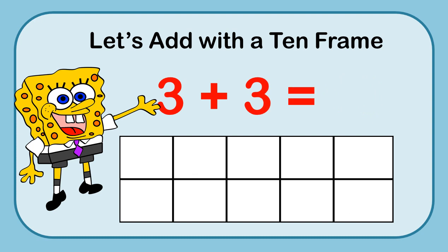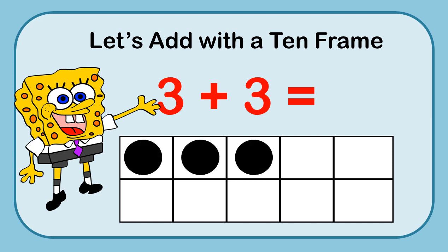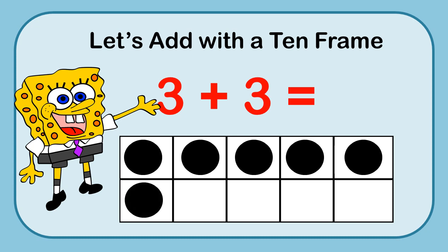Now we're going to try working with a 3. So 3 plus 3. Let's add my 3 markers: 1, 2, 3. And then 3 more: 1, 2, 3. I know that there's 5 on the top line, and counting up one more is 6. So I know my answer is 6. 3 plus 3 is 6.